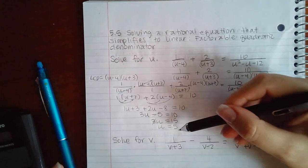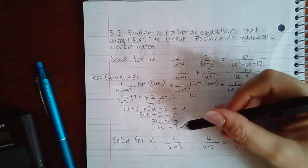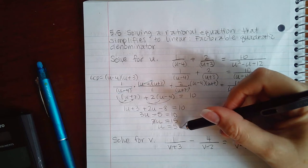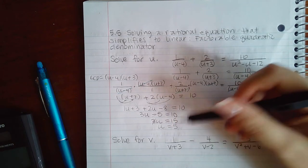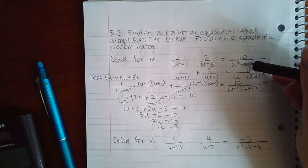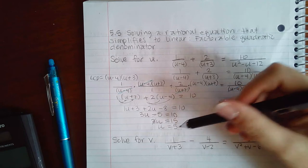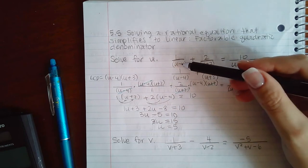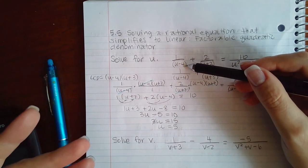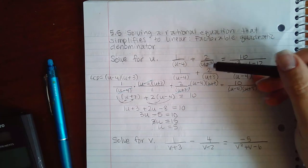As long as this answer does not make any of these denominators 0, this is my solution. If it does make any of these denominators equal 0, then this is not a solution. 5 minus 4 is not 0, it's 1, so it's good here. 5 plus 3 is not 0, it's 8.